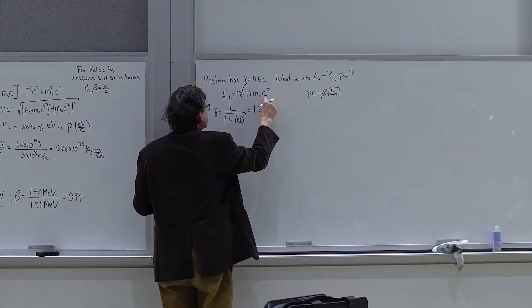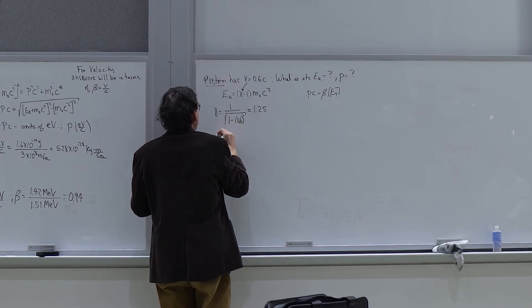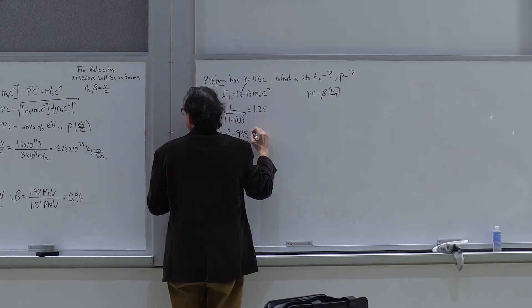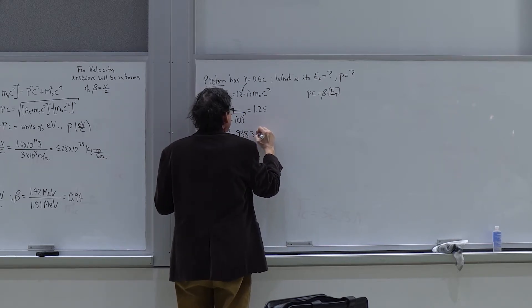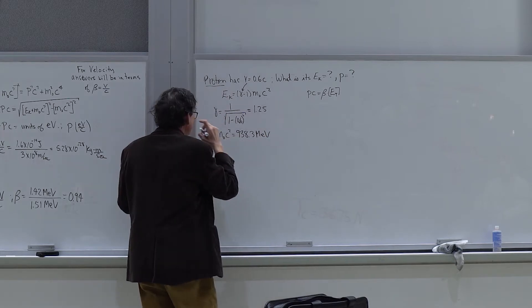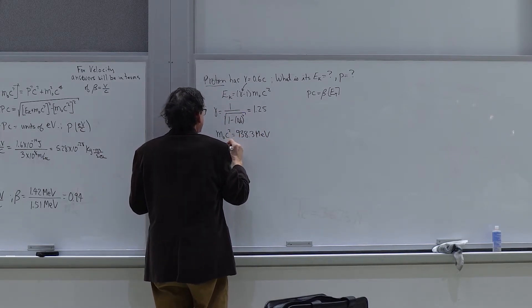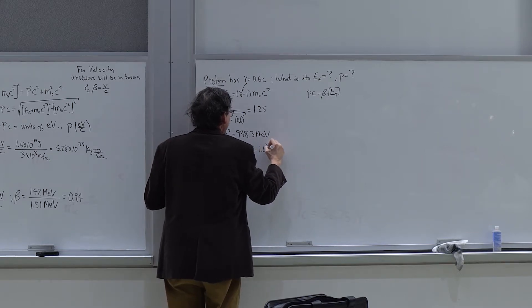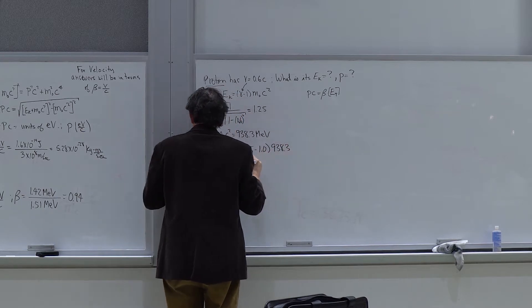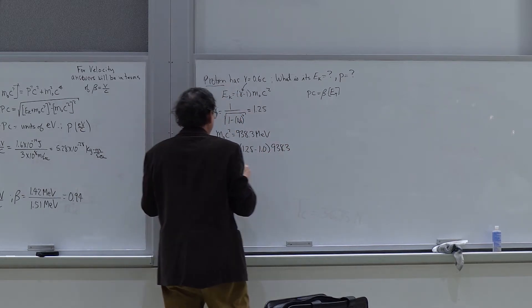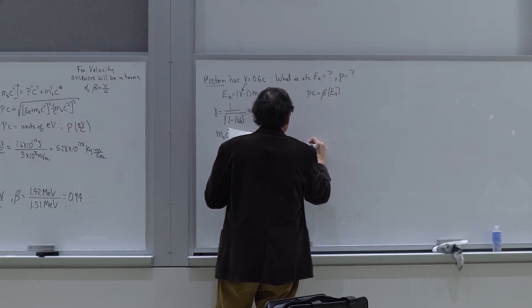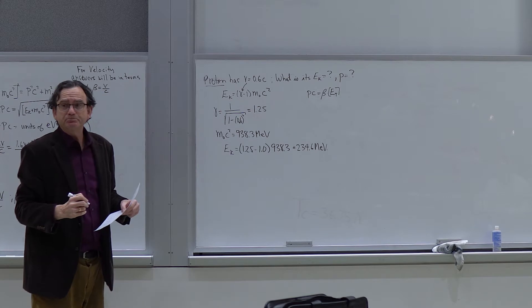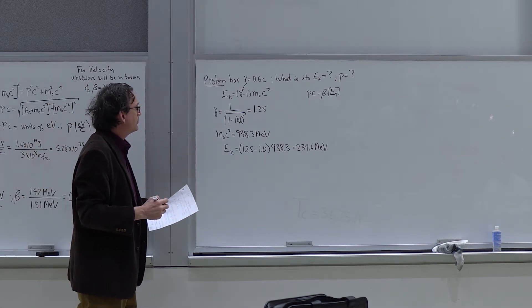For a proton, m₀c² = 938.3 MeV. So the kinetic energy = (1.25 − 1.0) × 938.3 = 0.25 × 938.3 = 234.6 MeV. That's the kinetic energy: 234.6 MeV.